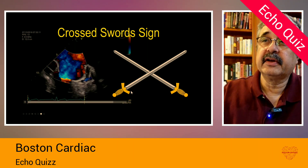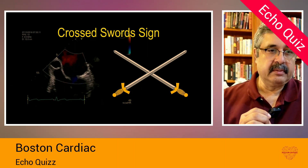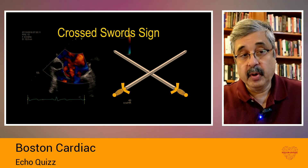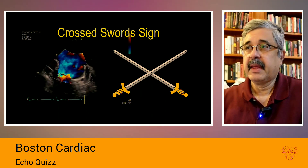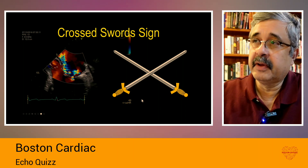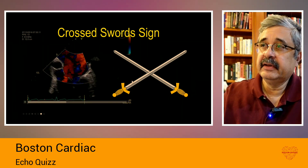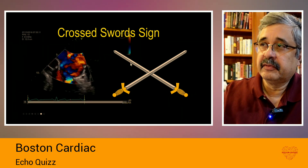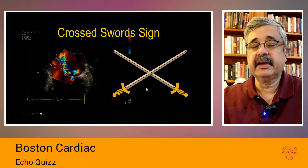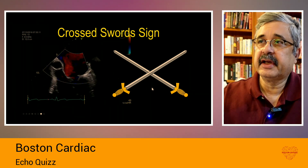The clinical significance is that it implies there is a bileaflet problem, meaning there are problems in both leaflets. This sign was described by Robert Levine from Massachusetts General Hospital in 1987, who referred to it as the crossed sword sign.